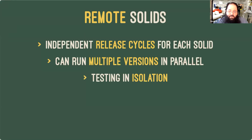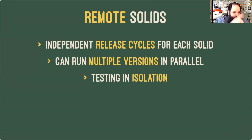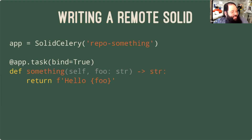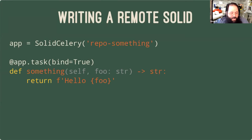We can run multiple versions of each solid in parallel, and the pipelines can pick which versions they want to use, so we can do a gentle promotion cycle. If a new version of something isn't working great in the pipeline, we can go back to sending to the old version, which is still running just fine. This is a simple use case of a remote solid — it looks an awful lot like a Celery task, because it is a Celery task. We have some helpers to define them more quickly, but overall it's just normal Celery. Each of these would be in its own GitHub project with its own CI and its own everything.